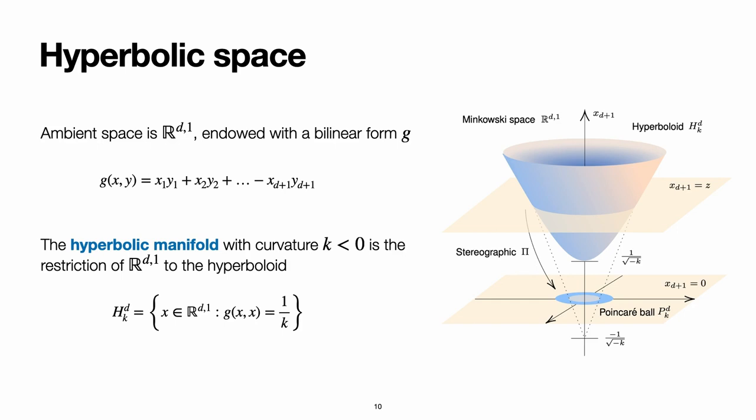To define the hyperboloid model, we need an ambient space that is D plus one dimensional, and we introduce here a bilinear form G. If we consider then a hyperboloid, or the upper sheet of a hyperboloid in this space together with this bilinear form, we obtain a negatively curved space that is known as the hyperboloid or the Lorentz model of hyperbolic space.